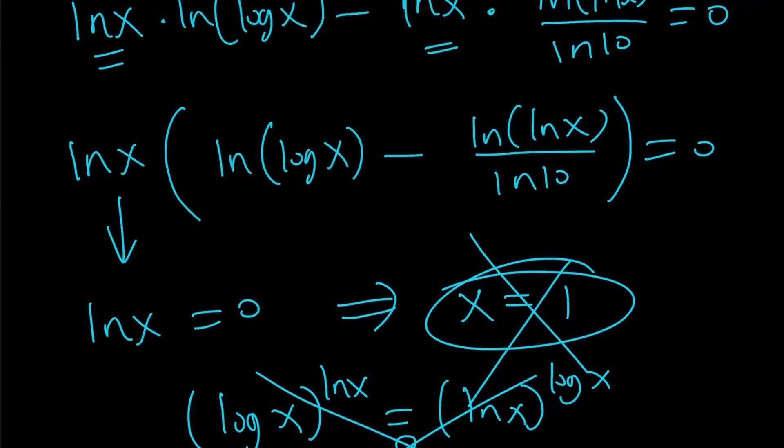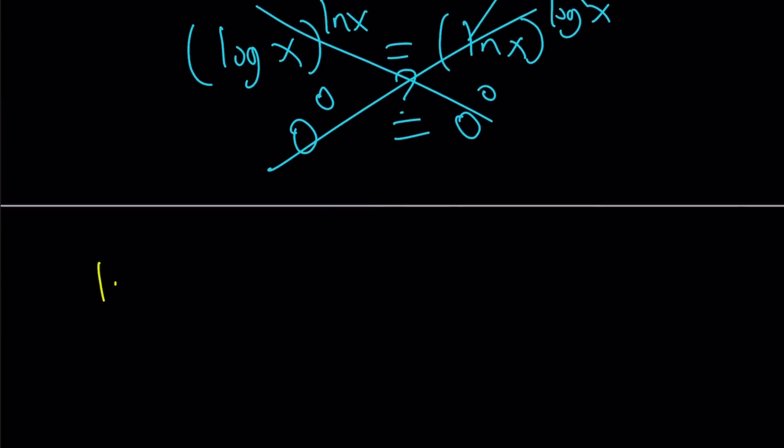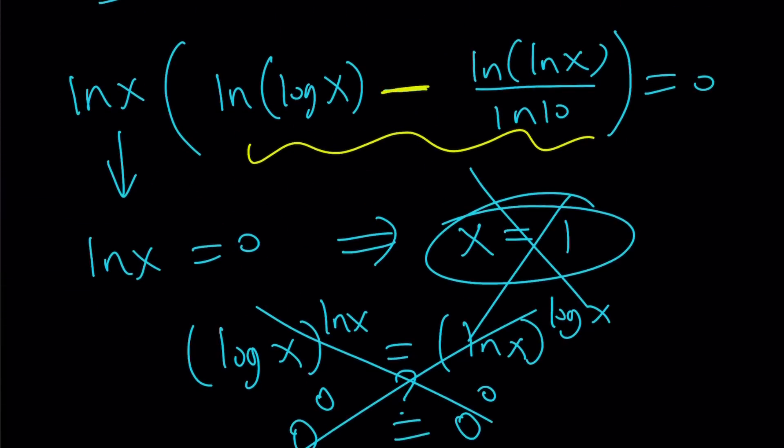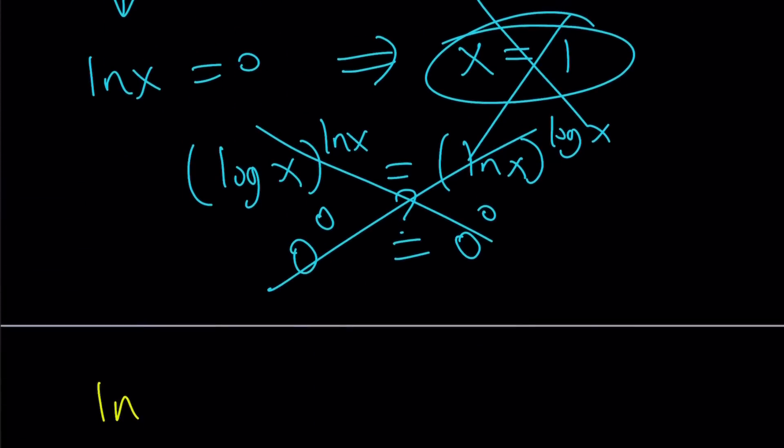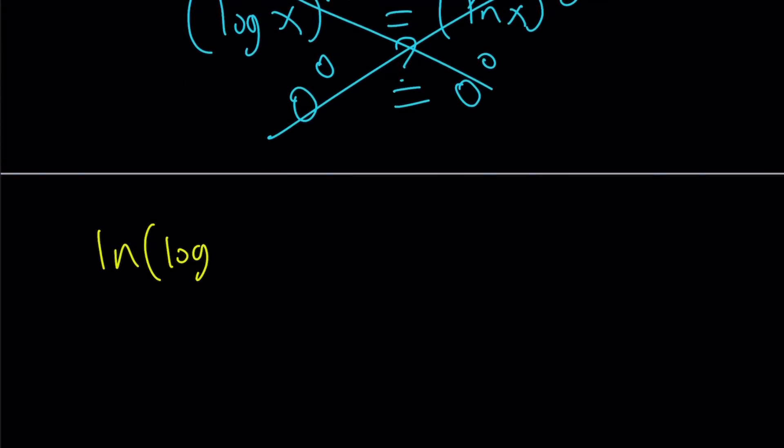We're going to go with the other factor. Let me rewrite it. And maybe, actually, why not add this to the right-hand side so we can get an equation? I have ln log x equals ln lnx over ln10. That's what I got from the second factor. What can I do with this? So here's what you can do. Change the log x again. Change the log x by using change of base. Because we want everything to be ln. And I can write this, as you know, as lnx over ln10.